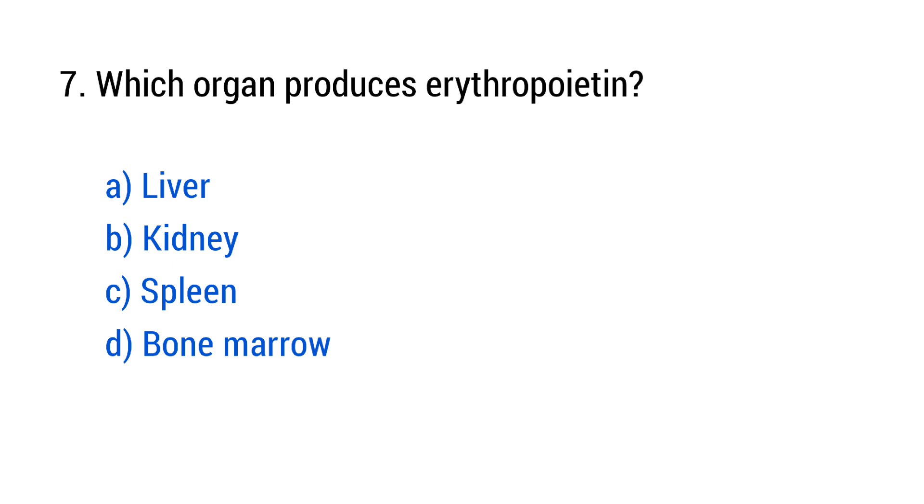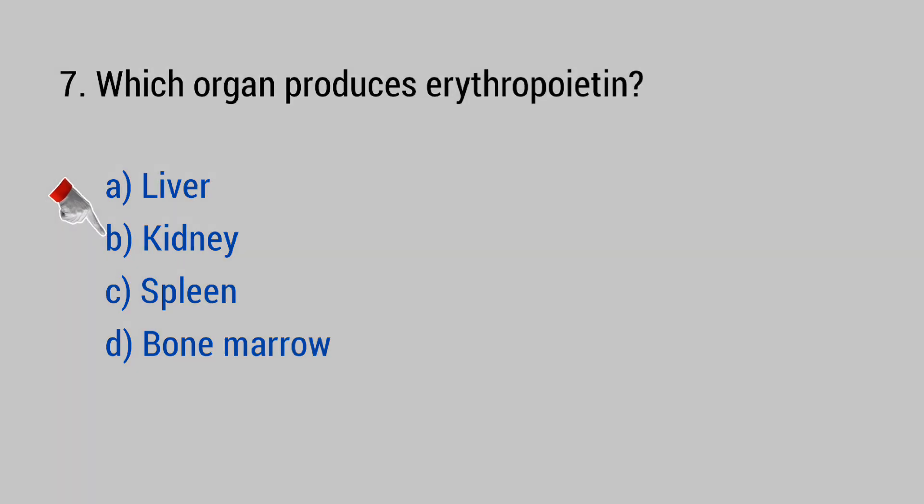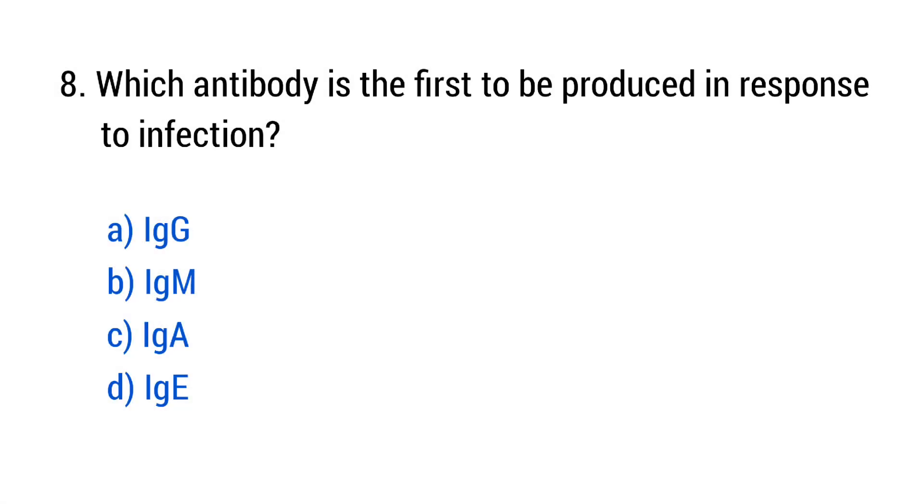Question number 7. Which organ produces erythropoietin? The right answer is option B, kidney. Question number 8. Which antibody is the first to be produced in response to infection? The right answer is option B, IgM.